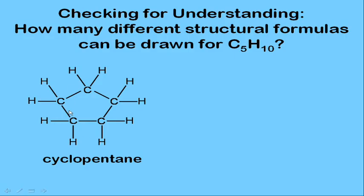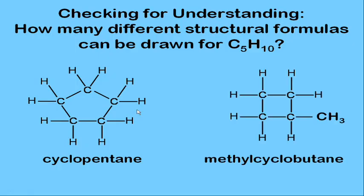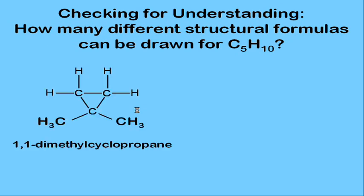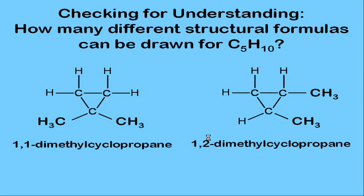Moving on to cycloalkanes for C₅H₁₀: cyclopentane has five carbons connected in a ring. With four carbons in a ring and one methyl group, the name is methylcyclobutane. With a three-carbon ring — cyclopropane — you need either two methyl groups or an ethyl group.